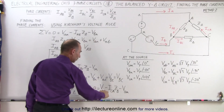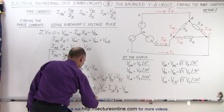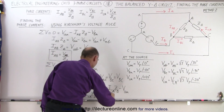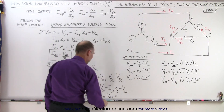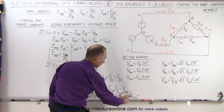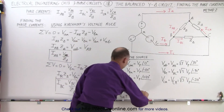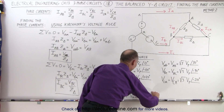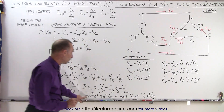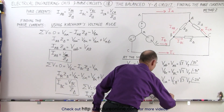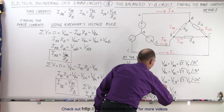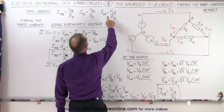Solving for ICA: ICA times the impedance is equal to VCN minus VAN, which can be written as VCN plus VNA. Combined, that gives the line voltage VCA. Dividing both sides by the impedance, ICA is equal to VCA divided by the impedance — the very same result as before.